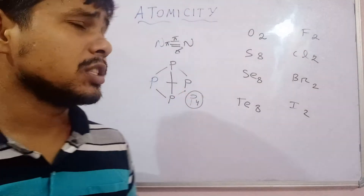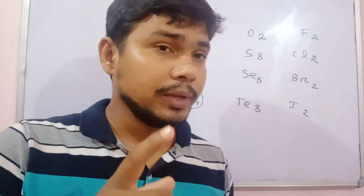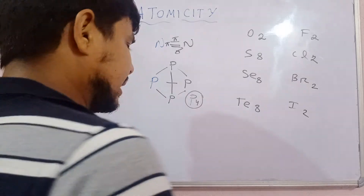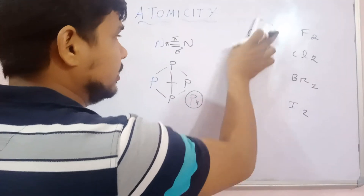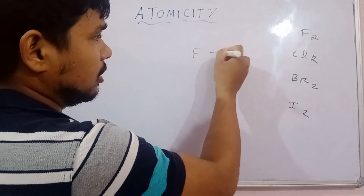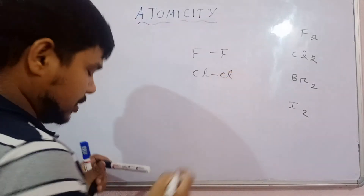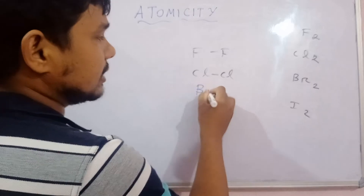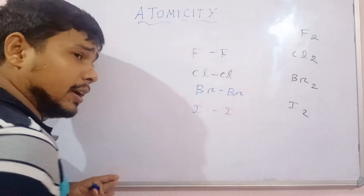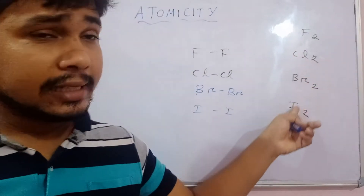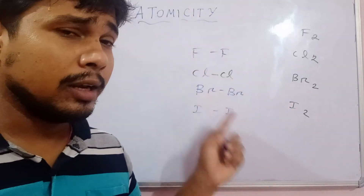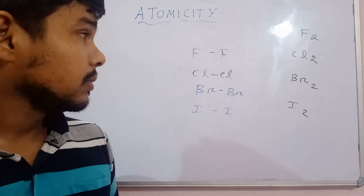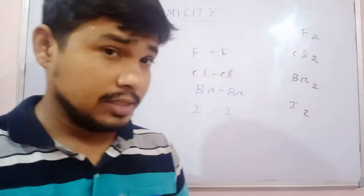That's why the atomicity of phosphorus is 4. Likewise, we can explain why oxygen is diatomic whereas sulfur is octatomic. For the halogens — fluorine, chlorine, bromine, iodine — only a single bond is essential, and a single bond can always be formed through head-on overlapping regardless of atomic size. So all halogens are diatomic, with no chances of polyatomic formation.